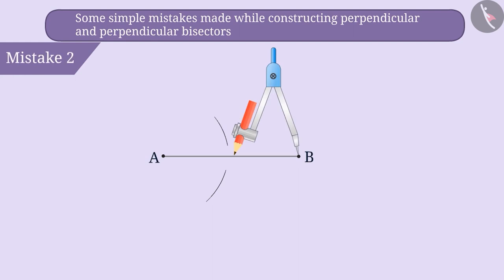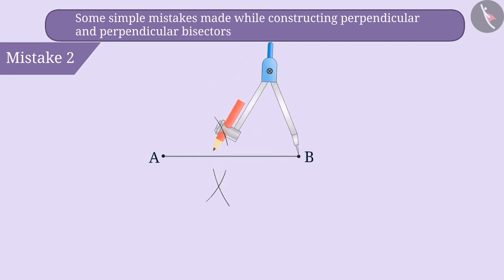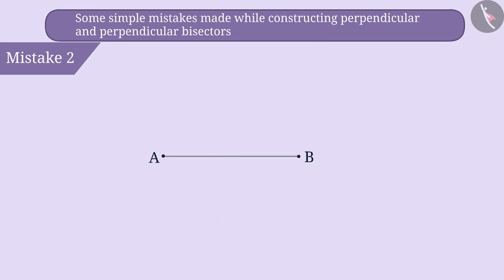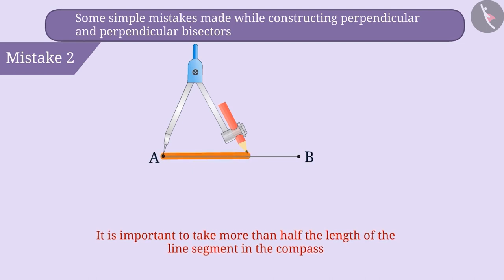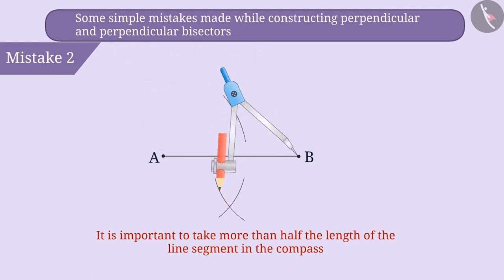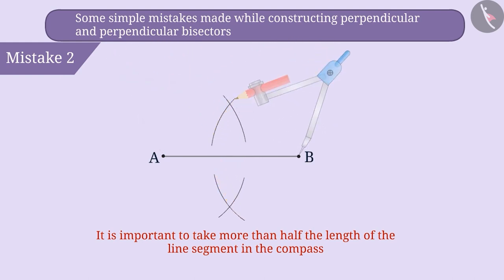Mistake 2. To draw an arc, they increase the length taken with the compass and construct an arc intersecting the previously formed arc. With this, they get a perpendicular but it is not the bisector of the line segment AB. The correct understanding is that we need to take more than half the length of the line segment with the compass to draw an arc from both points of the line segment without changing the compass setting. This gives the desired perpendicular bisector.